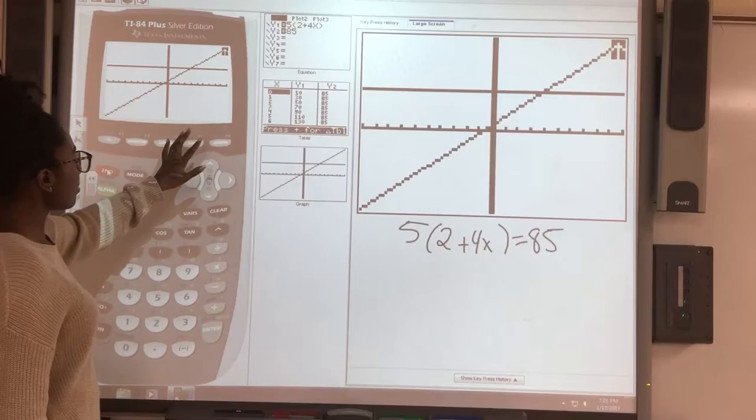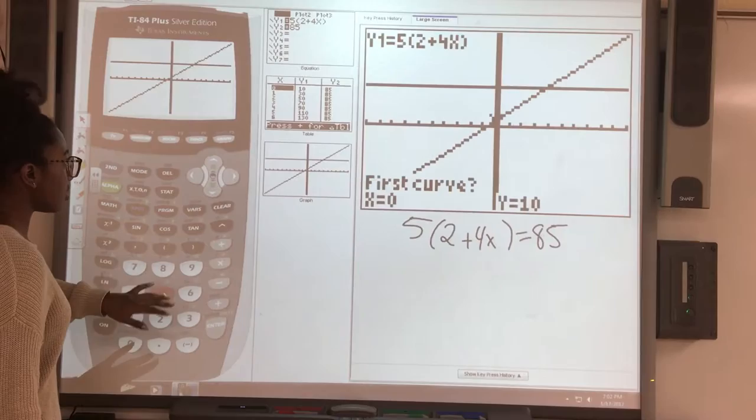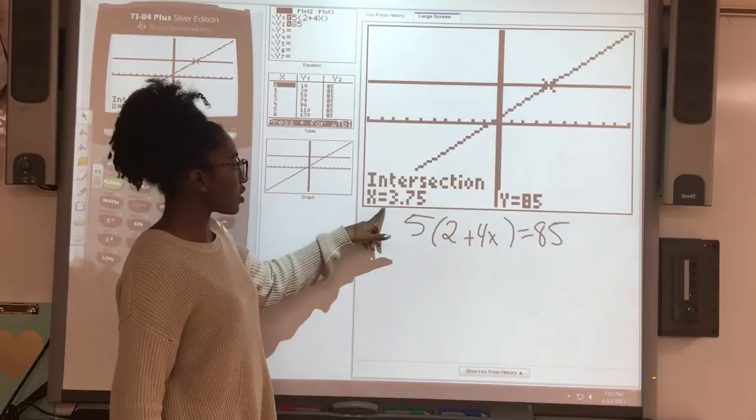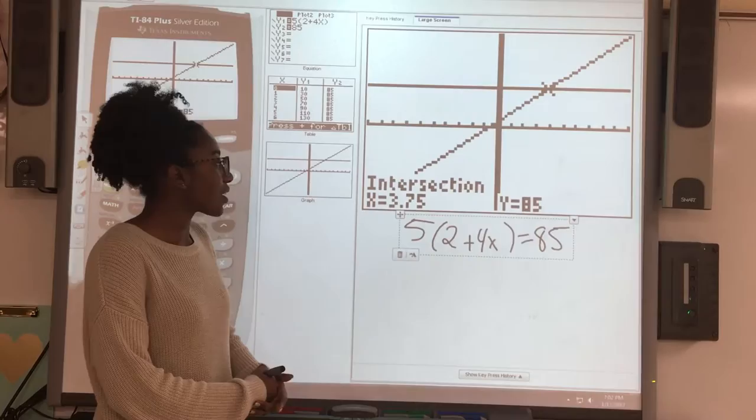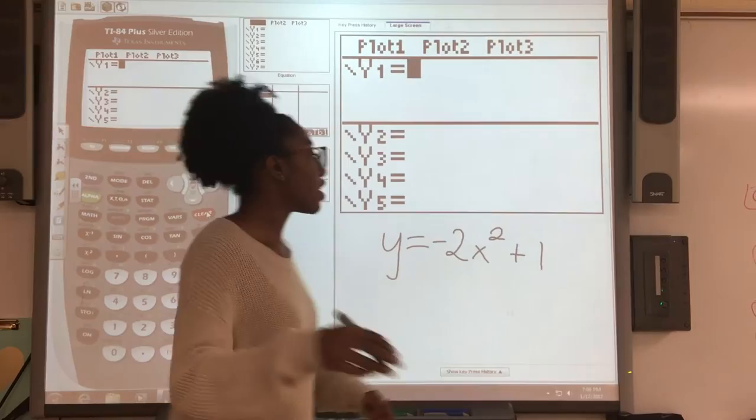And then the other side would just be 85. If I chose correctly, you can see both the graphs. Then you do 2nd, calc, and intersect again. Enter, enter, enter one more time. And you've got x equals 3.75. That's probably what you would have gotten if you did it by hand. Easy way to check.